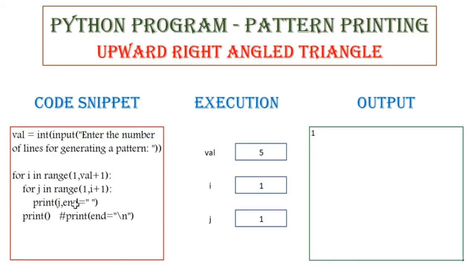And we have this argument end equal to space. Because by default, the value of end will be slash n, meaning each value will be printed on each line. So to have a pattern printed, we need to have a series of values printed on the same line, and that is why we are passing the argument end equal to space.